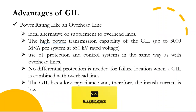GIL has power rating like an overhead line. The GIL is the ideal alternative or supplement to overhead lines. The high power transmission capability of the GIL — up to 3,000 MVA per system at 550 kV rated voltage — allows it to go directly underground in series with an overhead line without power reduction. The GIL also allows the use of protection and control systems in the same way as with overhead lines. No differential protection is needed for failure location when a GIL is combined with overhead lines. The GIL has a low capacitance and therefore the inrush current is low.